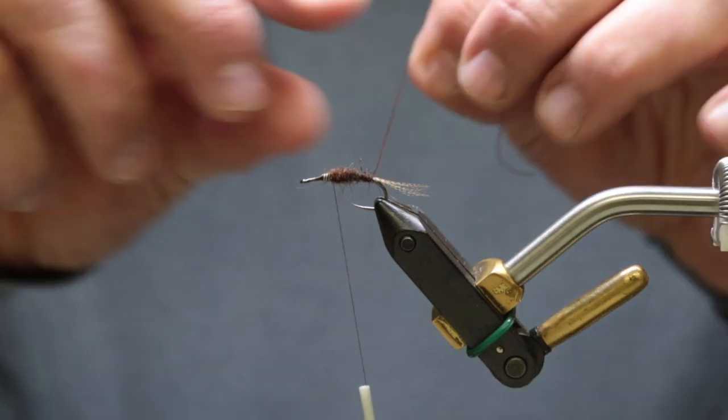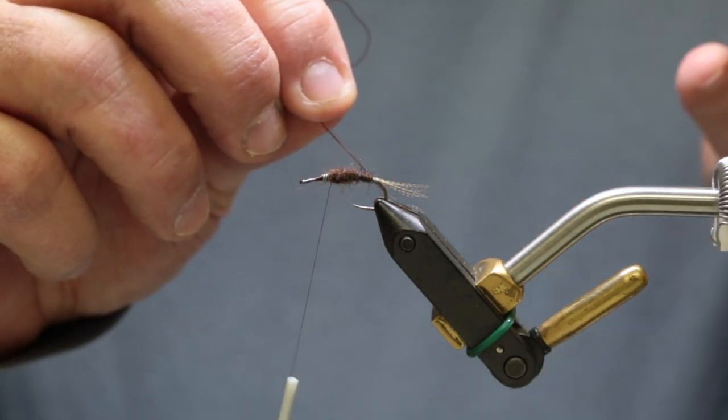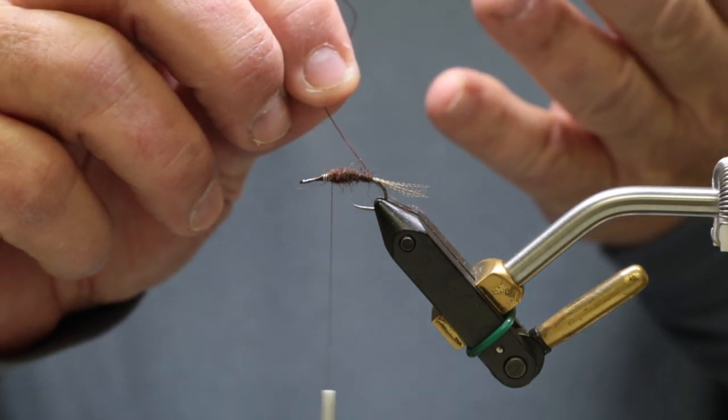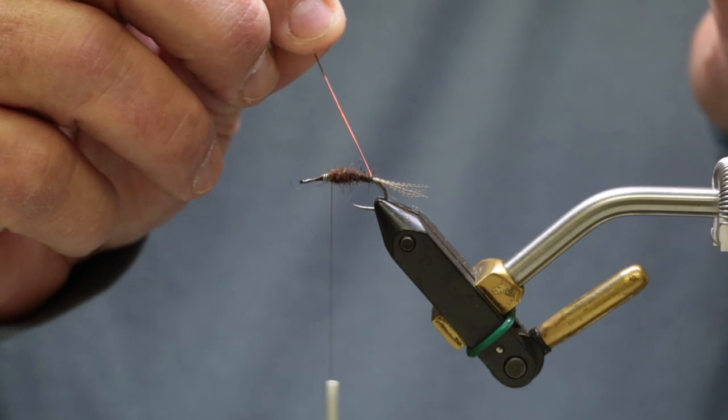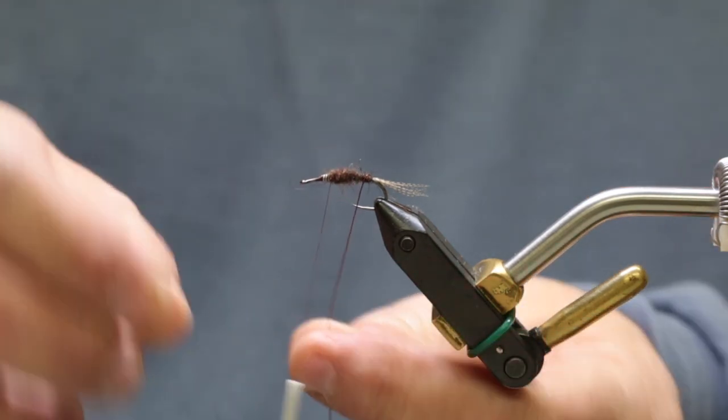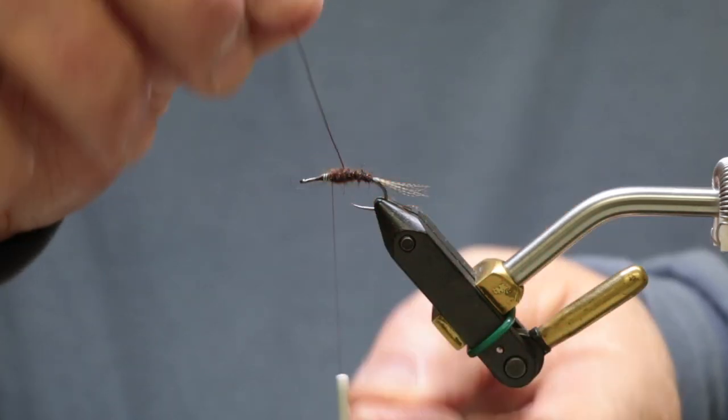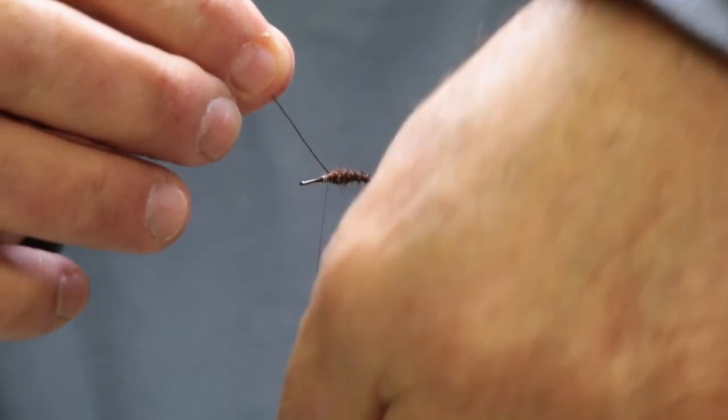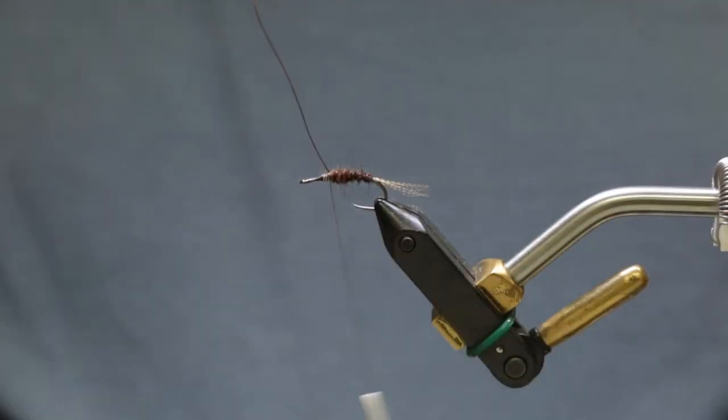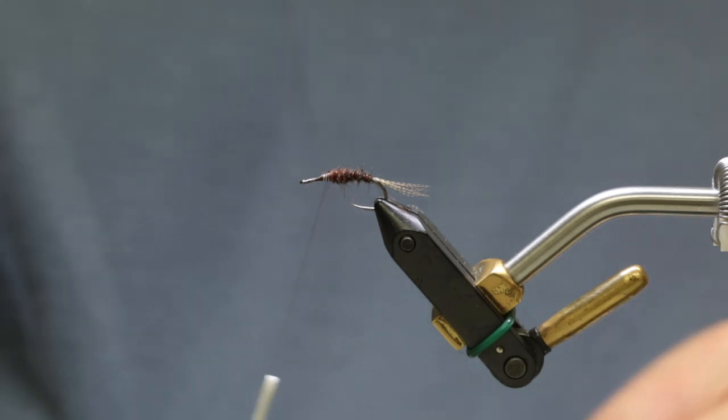We'll go up just a little bit over the weight we just wrapped, about right there. You don't have to counter-wrap this—it's just dubbing. I always counter-wrap when I use pheasant tails and stuff like that to secure the fly, but when you're using dubbing you don't really have to do that. Just wrap it up through, tie it off. Get your ratty scissors.